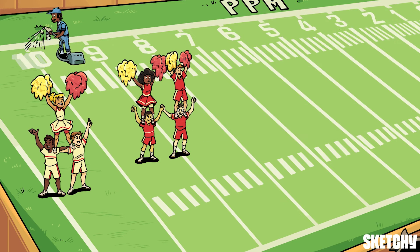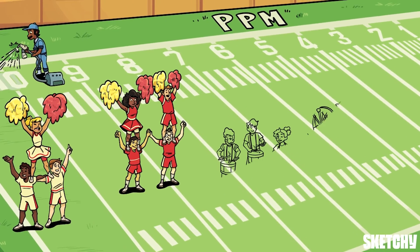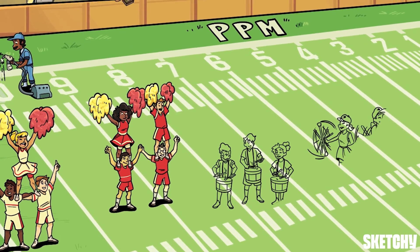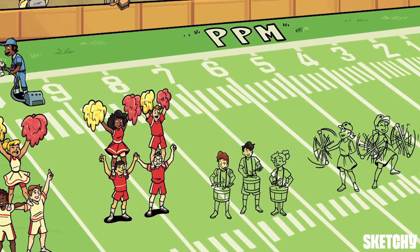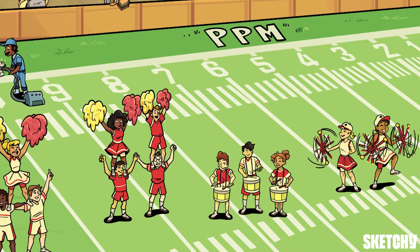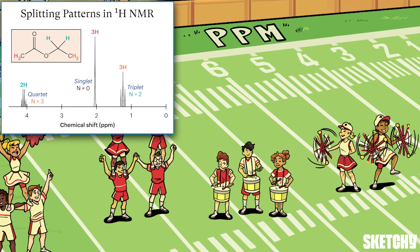There's one more valuable kind of information you can get from a proton NMR spectrum, and that comes from peak splitting — or how many mini peaks make up each major peak. Let's check out the drum majors to see more. Peak splitting tells you how many protons are on the atom next door to the atom whose peak you're analyzing.